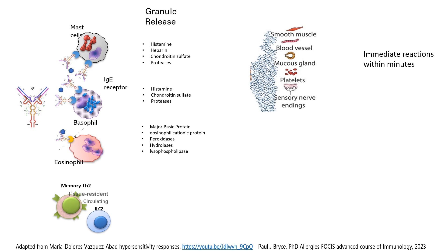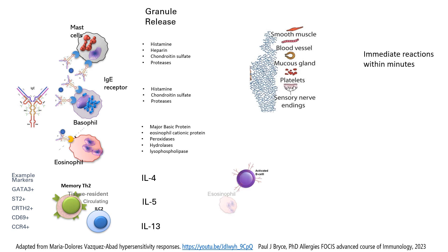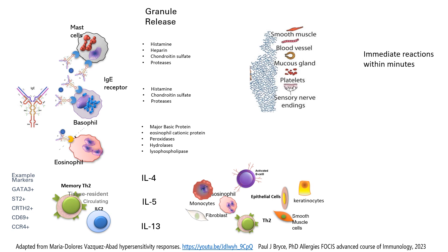The other types of cells involved in an allergic response are activated and they produce three cytokines: interleukin-4, interleukin-5, and interleukin-13. Not only are these three cytokines produced by different cells involved in the allergic response, but they also bind receptors in many different cells. This causes the late phase response several hours later.